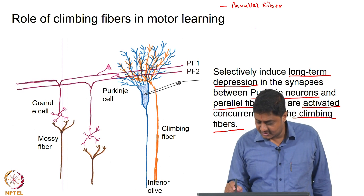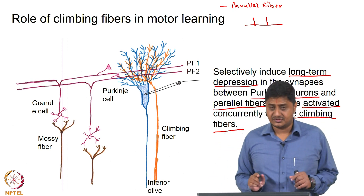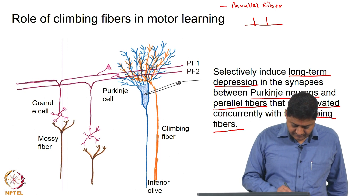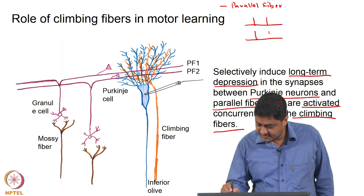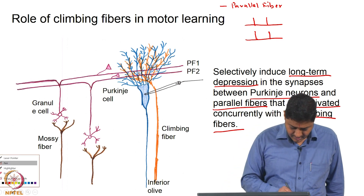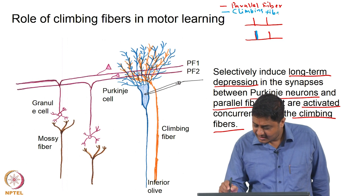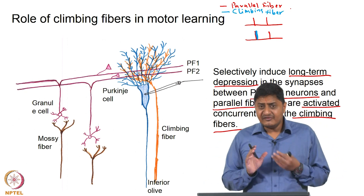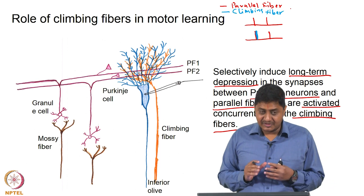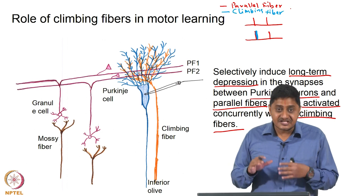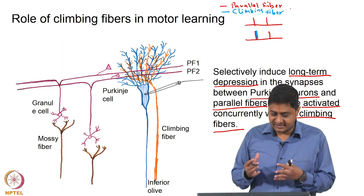Consider two cases. In the first case, only the parallel fibers are stimulated without climbing fibers. Climbing fiber stimulation provides a relatively strong input to Purkinje cell activity and causes what are called complex spikes due to protracted calcium conductance — this has been discussed in previous classes. Due to this protracted calcium conductance, complex spike activity is observed in Purkinje cells.